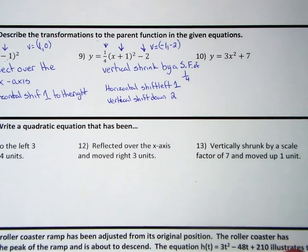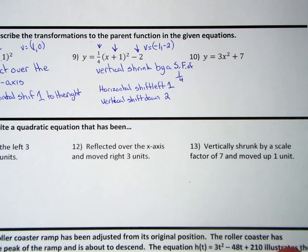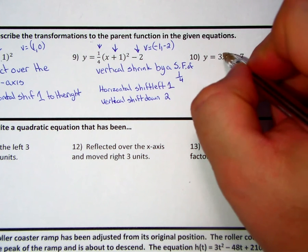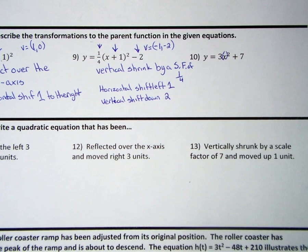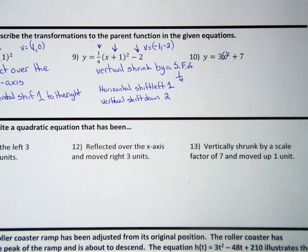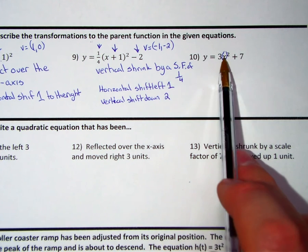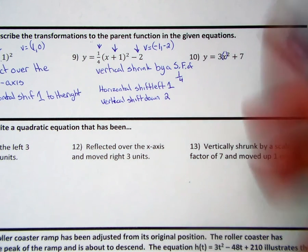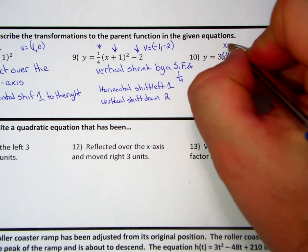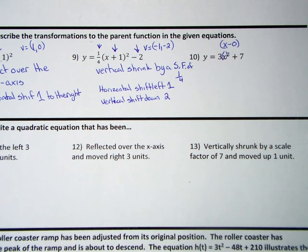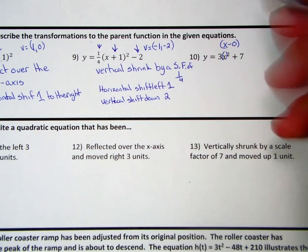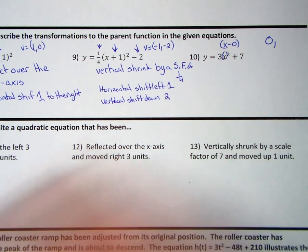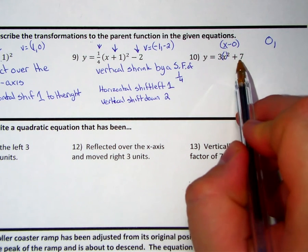Question number ten: y equals three x squared plus seven. It's important to remember anytime we see an x squared here, we go ahead and put it in parentheses, and then we can figure out what the x value of the vertex is based on what number would be inside that parentheses. Well, the only number that could be inside that parentheses is an x minus zero for it to simplify down to x. So we know that the vertex has an x value of zero. In the parentheses, the value outside the parentheses is seven.